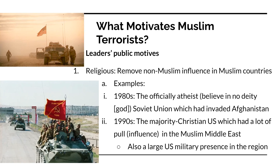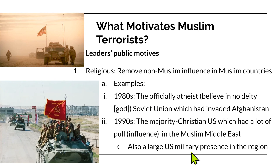Bin Laden was born in 1957. In 1980 he would have been 23 years old, so he was in his 20s and into his 30s fighting the Soviets. Then in his 40s and early 50s he was planning the bombing of U.S. embassies in Tanzania and Kenya, and he would have been 54 when 9/11 happened. So he did this for a long time.